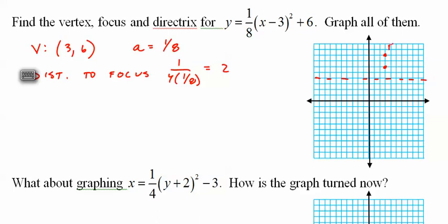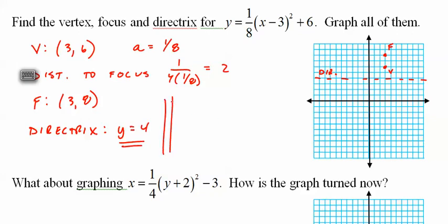So you've got a focus here, a vertex here, directrix here. So if the focus is 2 up, it's at 3 comma 8. If the directrix is 2 down, it's at y equals 4.